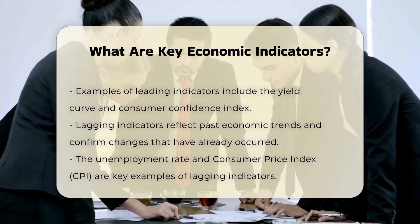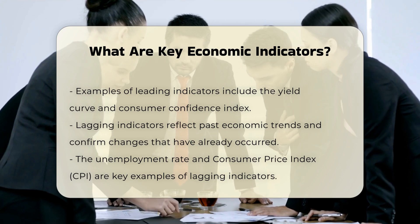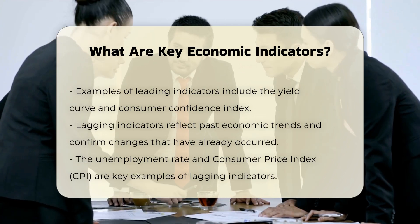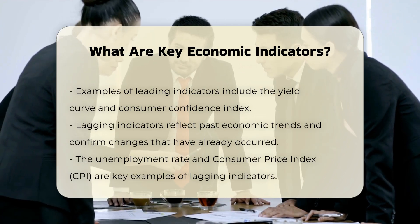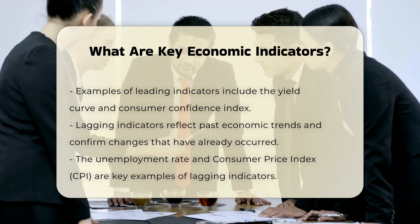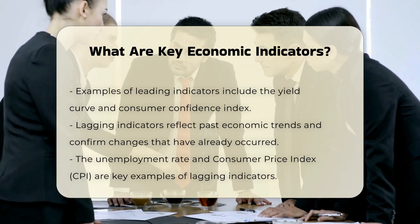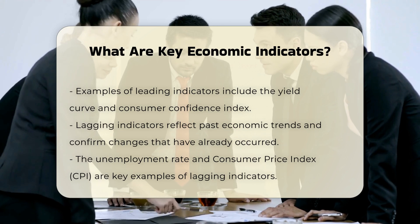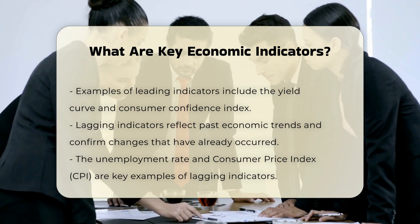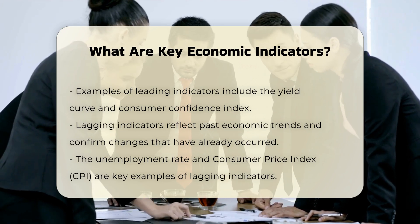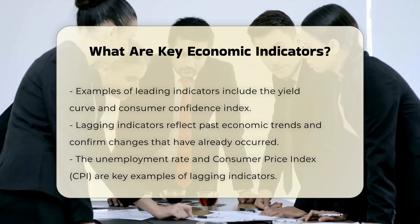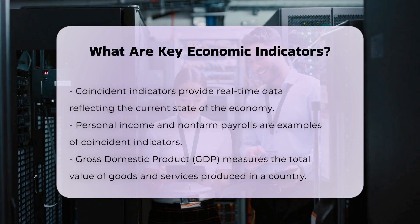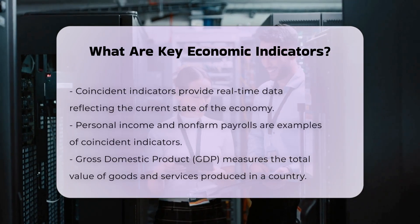Gross Domestic Product, GDP, is a primary indicator of macroeconomic performance, measuring the total value of all final-stage goods and services produced and sold within a country over a specific period. It is often considered a lagging indicator, but is so critical that it is sometimes viewed as a coincident indicator.